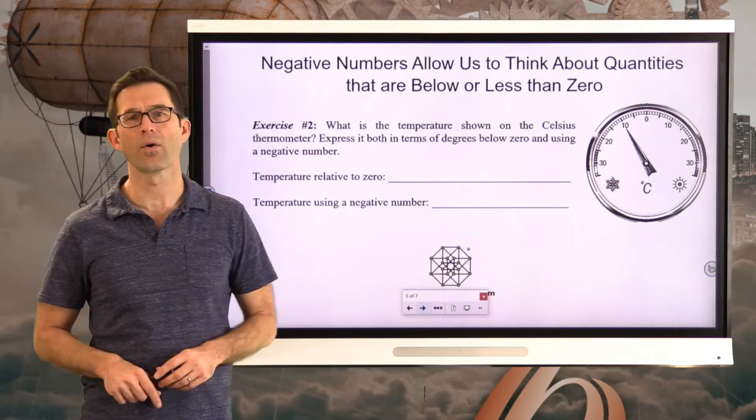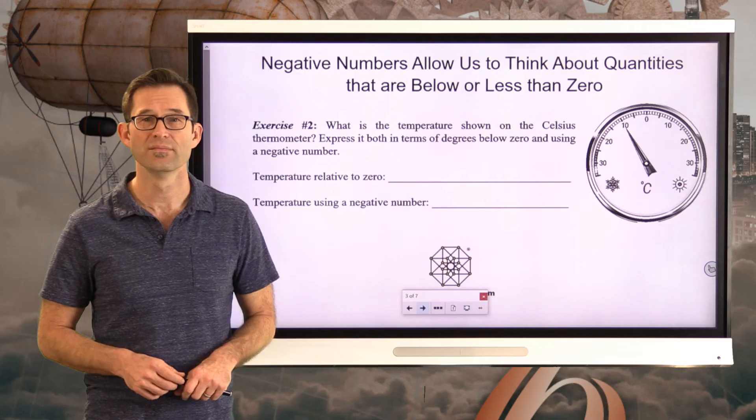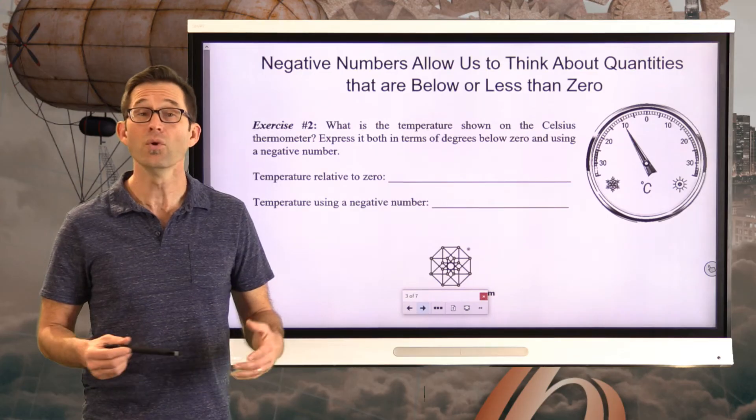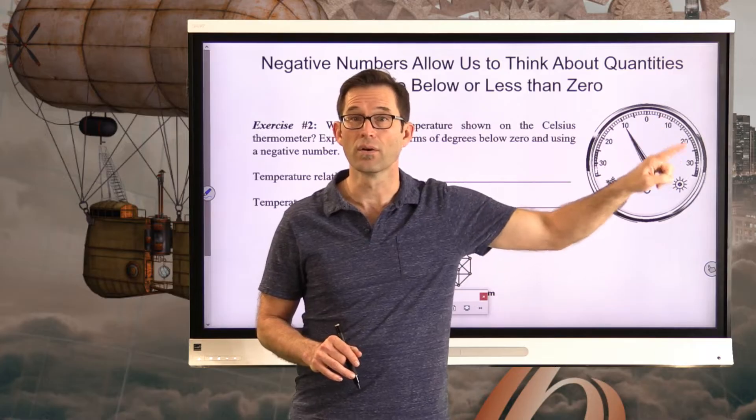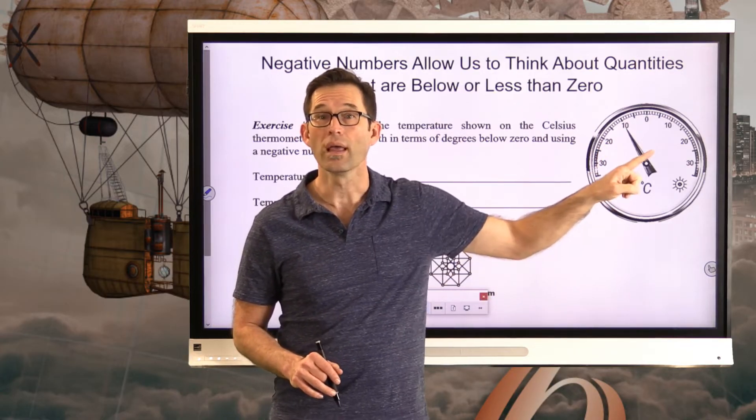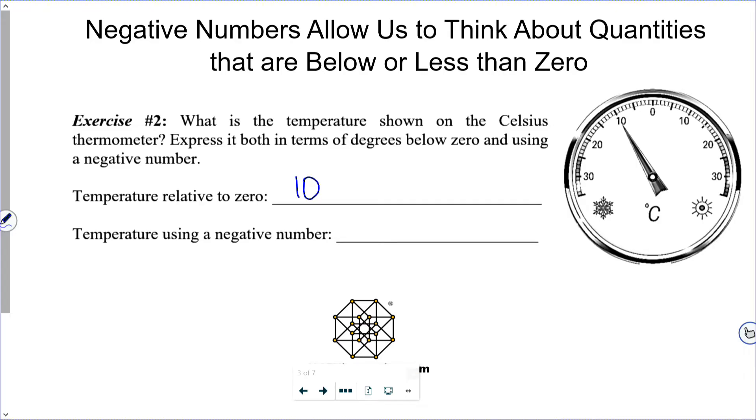Negative numbers allow us to think about quantities that are below or less than zero. Exercise number two. What is the temperature shown on the Celsius thermometer? Express it both in terms of degrees below zero and using a negative number. Pause the video now and fill in these two blanks. And you will hear weather forecasters use both of these terms. Here's our zero mark on the scale. All of these temperatures up here, on the sunny side of things, are warmer. All these temperatures down here are less than zero, symbolized by the snow symbol. It looks like this temperature is 10 degrees below zero. And oftentimes, you'll hear weather forecasters say things like, the low today is going to be 10 degrees below zero.